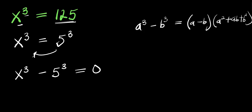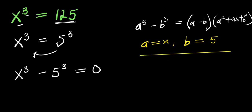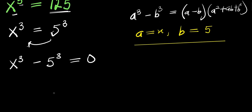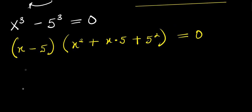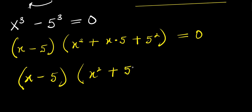So from here we have a equals x and b equals five. Replacing these values, we have x minus five times x squared plus x times five, plus five squared equals zero. So that is x minus five times x squared plus five x plus twenty five equals zero.